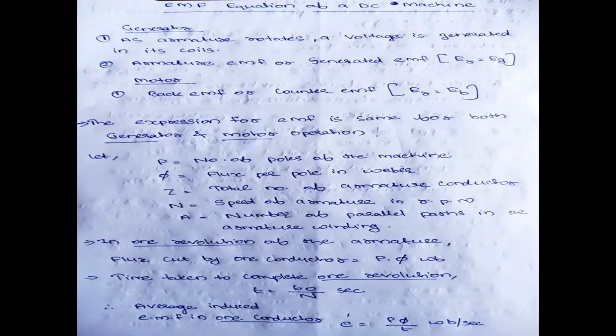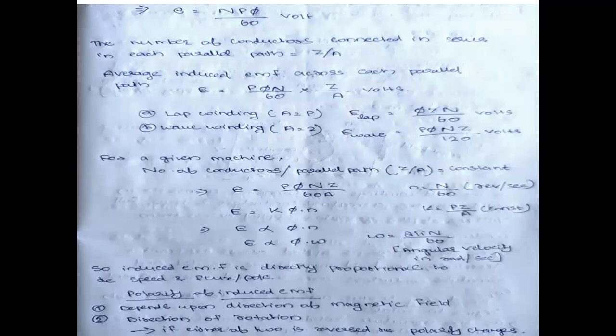The number of conductors connected in series in each parallel path is Z/A, since Z is the total number of armature conductors and A is the number of parallel paths in the armature. So the average induced EMF across each parallel path — we need to multiply by Z/A — giving E = P × phi × N / 60 × Z/A.